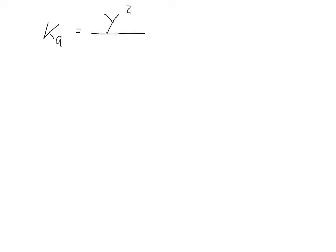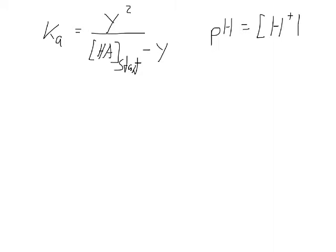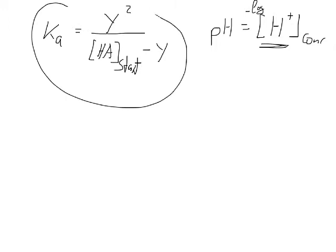So let me write this down again because it's quite important: Ka = y² divided by (HA_start minus y). What we are looking for when we want to calculate pH is the proton concentration — that is what pH is all about. So we need to find out the proton concentration; in other words, we need to solve this equation for y.